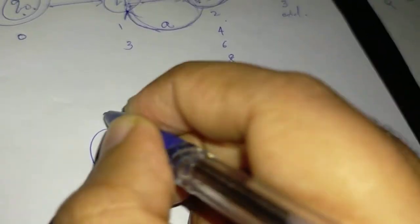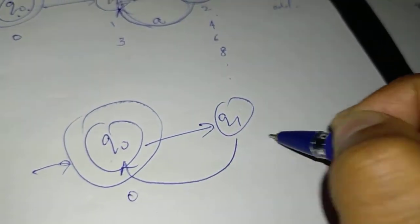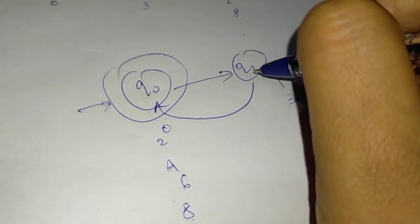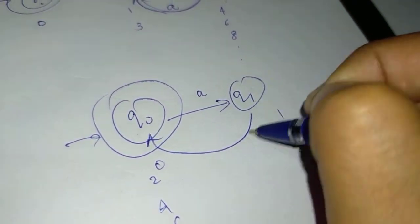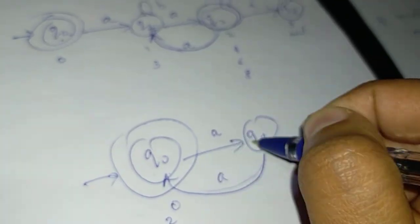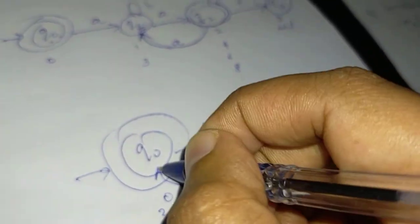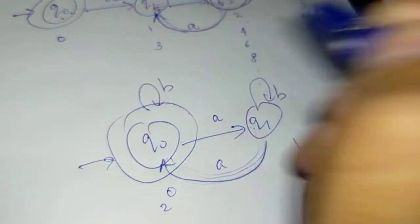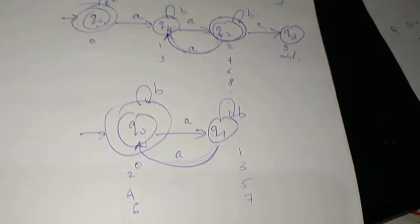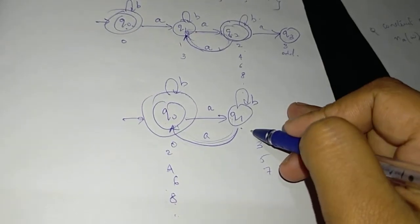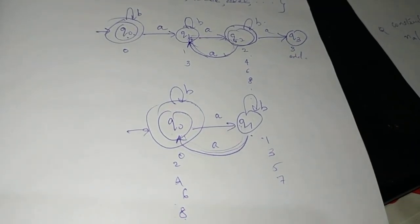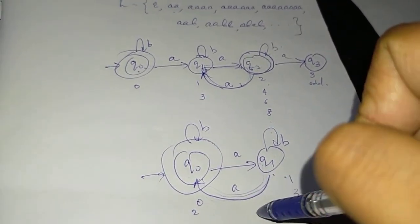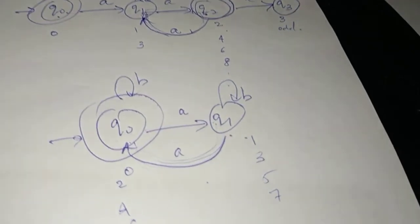Let's take the minimal DFA. Q0 is the initial and final state — epsilon accept, accepting counts 0, 2, 4, 6, 8 and so on. On A, A — we go to Q1 then back to Q0, creating a two-state DFA with a self-loop on B at each state. This is the corresponding minimal DFA where the number of a's in the string is even.